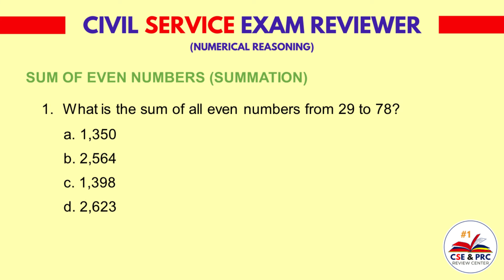Question 1: What is the sum of all even numbers from 29 to 78? a. 1,350  b. 2,564  c. 1,398  d. 2,623